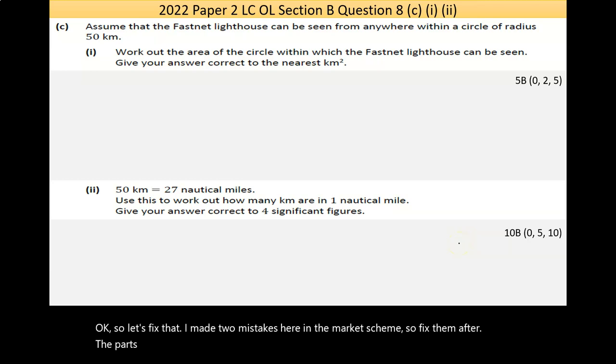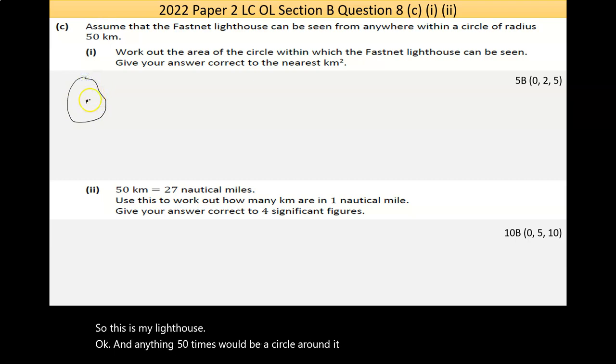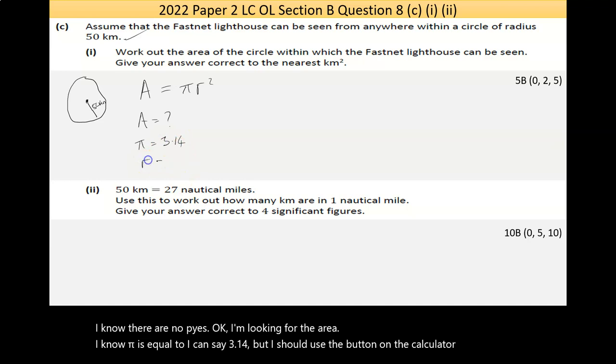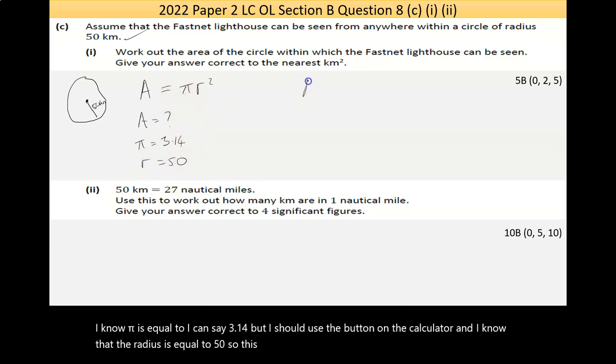Now, part C here says, Assume that the Fastnet lighthouse can be seen from anywhere within a circle of 50 kilometers. So, this is my lighthouse. And anywhere within 50 kilometers would be a circle around it. A terrible drawn circle. And that would be 50 km. Now, even drawing that, as bad as it is, shows I understand the question. Work out the area of the circle within which the Fastnet lighthouse can be seen. So, I can look this up at the maths tables, but the area of a circle is pi times the radius squared. Now, I know there, I know what pi is. I'm looking for the area. I know pi is equal to, I can say 3.14, but I should use the button on the calculator. And I know that the radius is equal to 50. So, this equation only has one unknown. So, this can be solved.